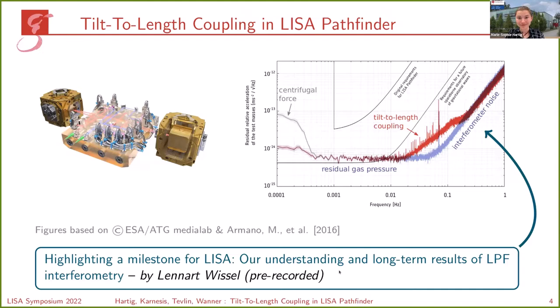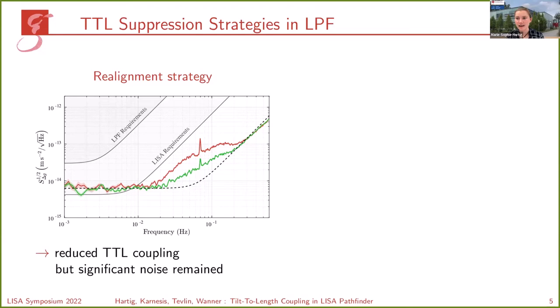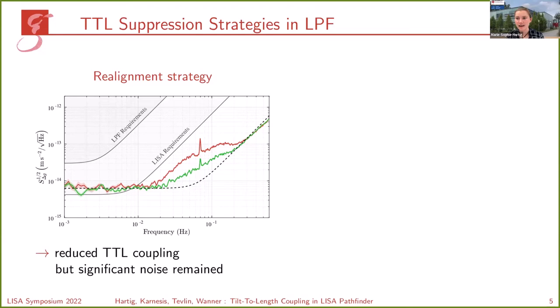It was the limiting noise source between 20 and 200 millihertz. In LISA Pathfinder there had been mainly two suppression strategies. First, the tilt-to-length coupling depended on the alignment of the test masses. Therefore, at three times during the mission, the test masses had been realigned for direct tilt-to-length coupling suppression. The first realignment took place after the engineering phase in March 2016 and it reduced the relative acceleration of the test masses significantly from the red curve down to the green curve.